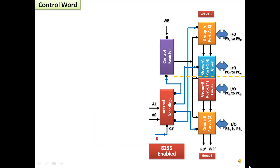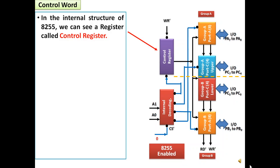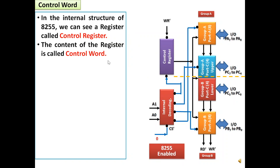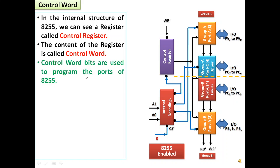Let us now briefly explain the internal structure of 8255 along with the control word. In the internal structure of 8255, we can see a register which is called the control register, sometimes also called the control word register. The content of this register is called the control word. Control word bits are used to program the ports of 8255 and to select the mode in which 8255 will be programmed — sometimes in basic IO mode and sometimes in handshaking mode.